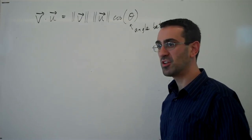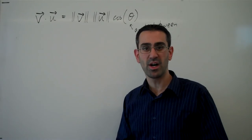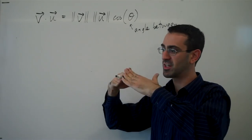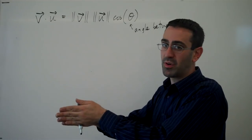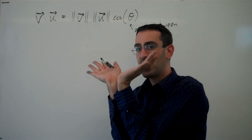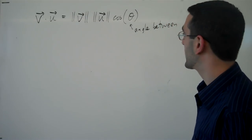The angle is always going to be between 0 and π, because no matter which direction the vectors point, the closest angle is always between 0, pointing in the same direction, and π, pointing in exactly opposite directions.